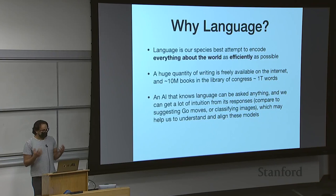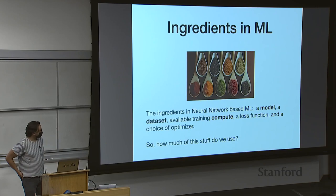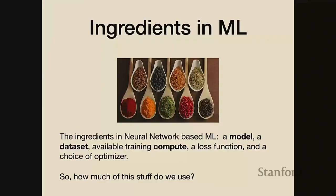There's a lot of work on trying to understand language model bias, racism, and other such issues. For contemporary neural network-based machine learning, the ingredients are surprisingly simple: a model to parameterize a function, a dataset, computers with plenty of computation, a loss function, and a choice of optimizer. For this talk, language modeling is the task where the loss function is simply to predict the next word in some sentence, paragraph, or book - that's how all the models I'll discuss are trained.